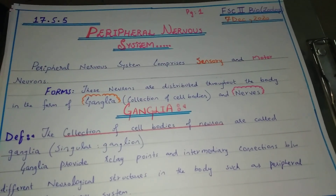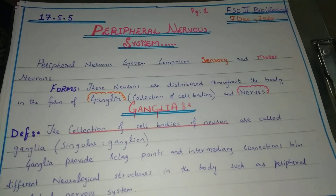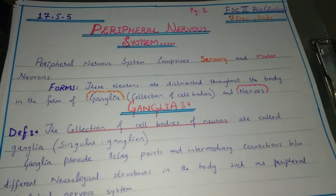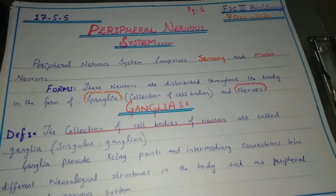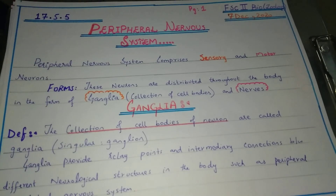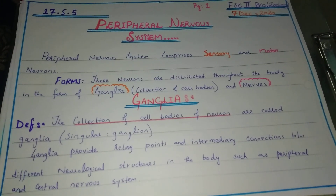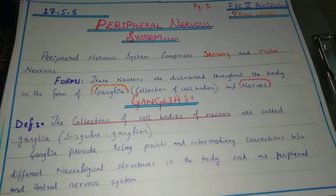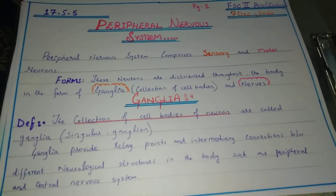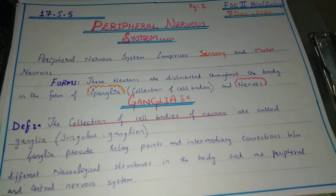The collection of neuronal cell bodies in the body is called the ganglia or ganglion. The collection of neuronal cell bodies inside the central nervous system is called the nucleus, while the collection of cell bodies in the peripheral nervous system is called the ganglia or ganglion. The ganglia connect different neurological structures in the body, such as the peripheral nervous system and the central nervous system — ganglia is actually the connection between the central and peripheral nervous system.